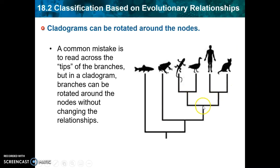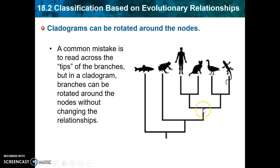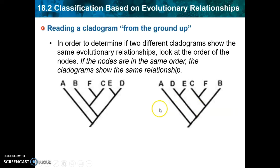It doesn't have to just be the tips — it could be another node closer to the bottom of the tree. We can absolutely rearrange a node by rotating it around without changing any ancestors. We still have the human and cat being most closely related, the goose and lizard being most closely related, and both groups sharing an ancestor in the same position. Even though we have rotated around a node, we haven't changed any of the relationships depicted in that cladogram. The best way to interpret a cladogram is to read from the ground up, look at the positions of the nodes, and think about what shares a common ancestor closest to the bottom.